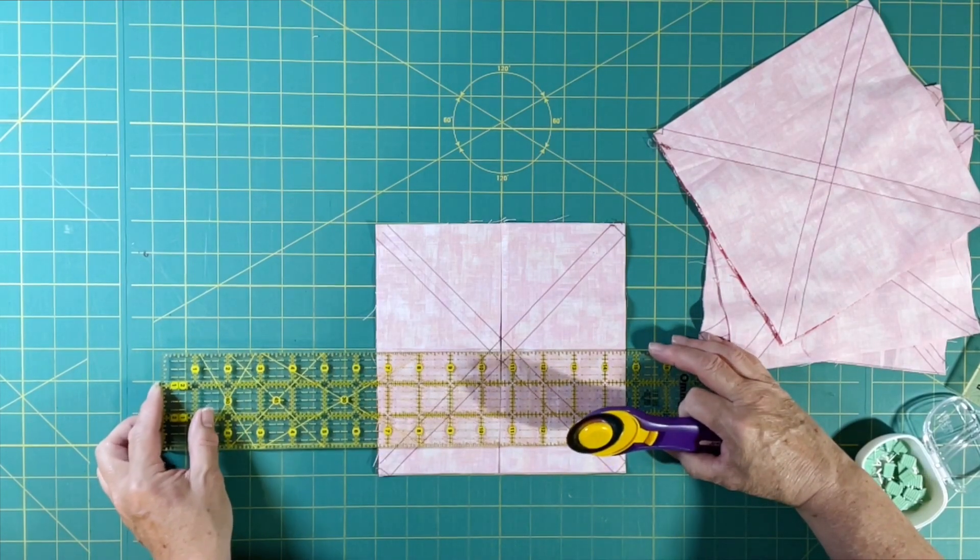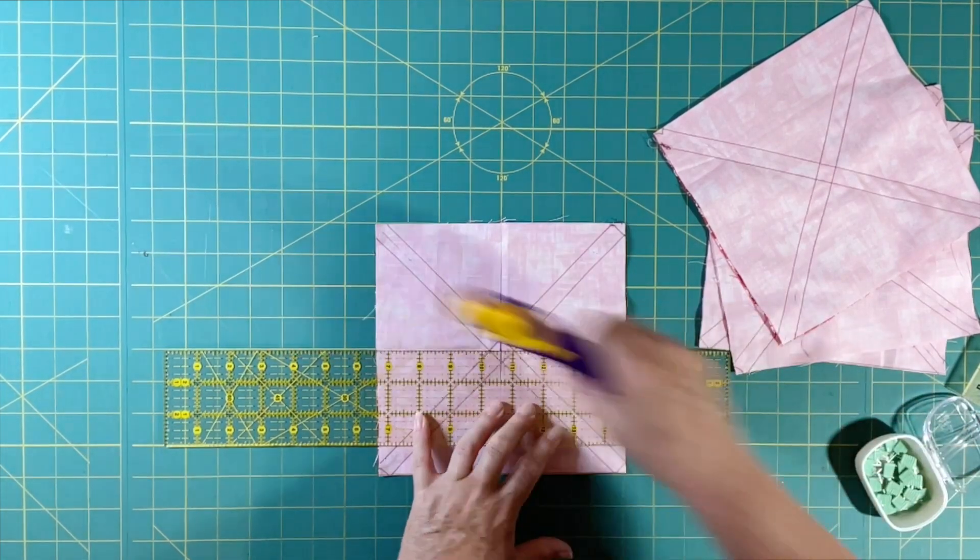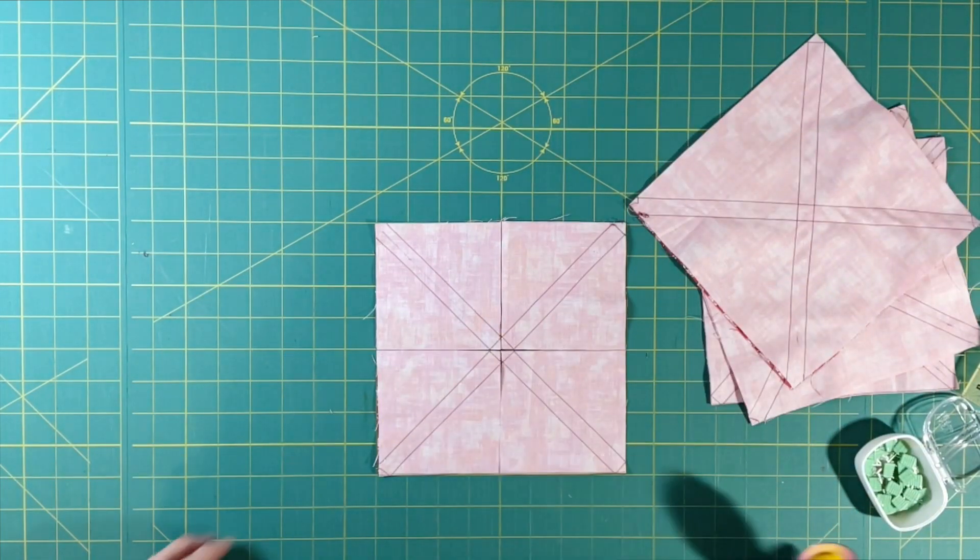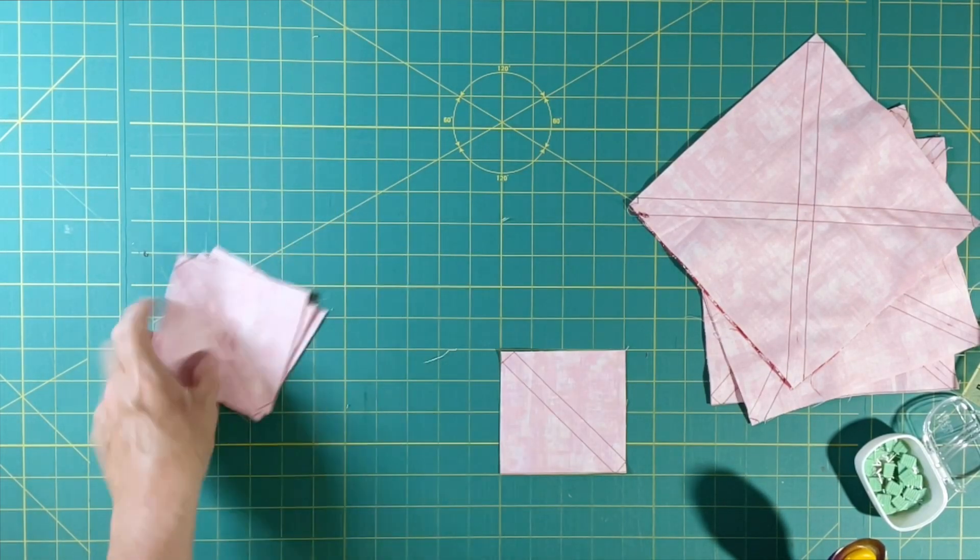And you can go back the other way on this, on the other line horizontal. The goal is to not move them. So now you have four individual ones.